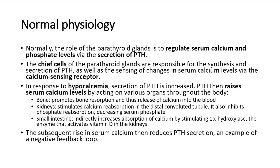PTH raises serum calcium levels by acting on various organs throughout the body. It promotes bone resorption and thus release of calcium into the blood. In the kidneys, it stimulates calcium reabsorption in the distal convoluted tubule and inhibits phosphate reabsorption, decreasing serum phosphate. In the small intestine, PTH indirectly increases absorption of calcium by stimulating 1-alpha-hydroxylase, the enzyme that activates vitamin D in the kidneys. The subsequent rise in serum calcium then reduces PTH secretion — an example of a negative feedback loop.